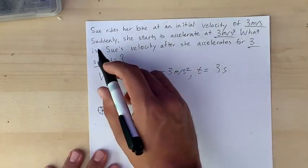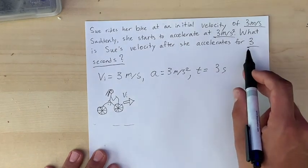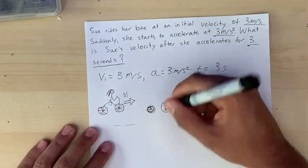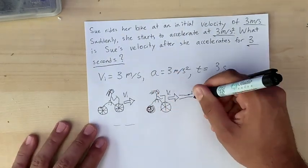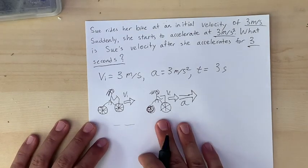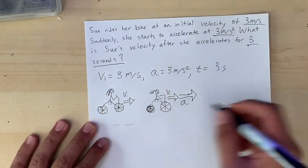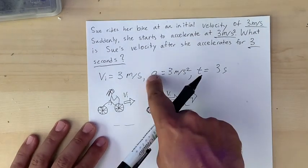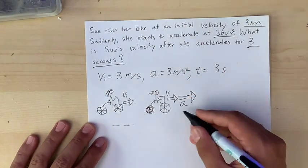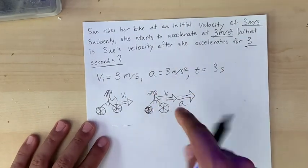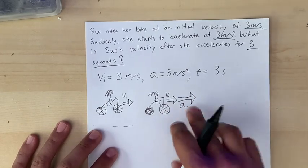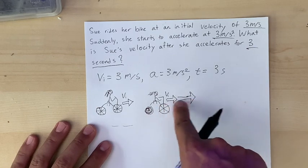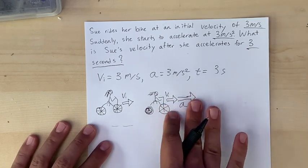Next, she suddenly starts to accelerate at three meters per second squared. Now I'll draw Sue on her bike as she accelerates. So here's the middle part of the story. Sue is now accelerating at three meters per second squared, our acceleration. And that's gonna be adding on a speed to her initial velocity. So I drew these two arrows right next to each other so we can visualize them being added together.